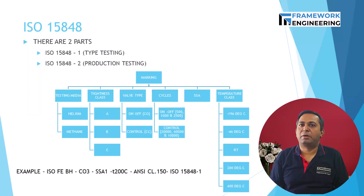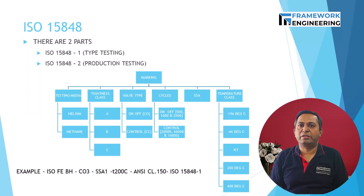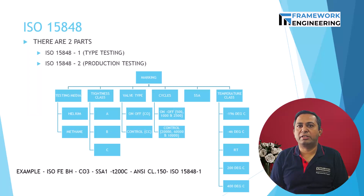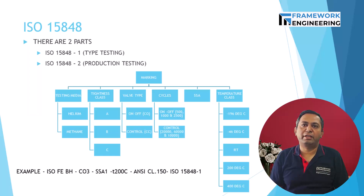As you can see in an example, a marking is done to indicate the complete details of the fugitive emission testing. For example: BH means tightness class B with helium as testing media; CO3 means it is an on-off valve with 2500 cycles; SSA1 means one stem seal adjustment done during testing; and T200 means the temperature class is 200 degrees centigrade. Followed by the rating and the applicable standard.